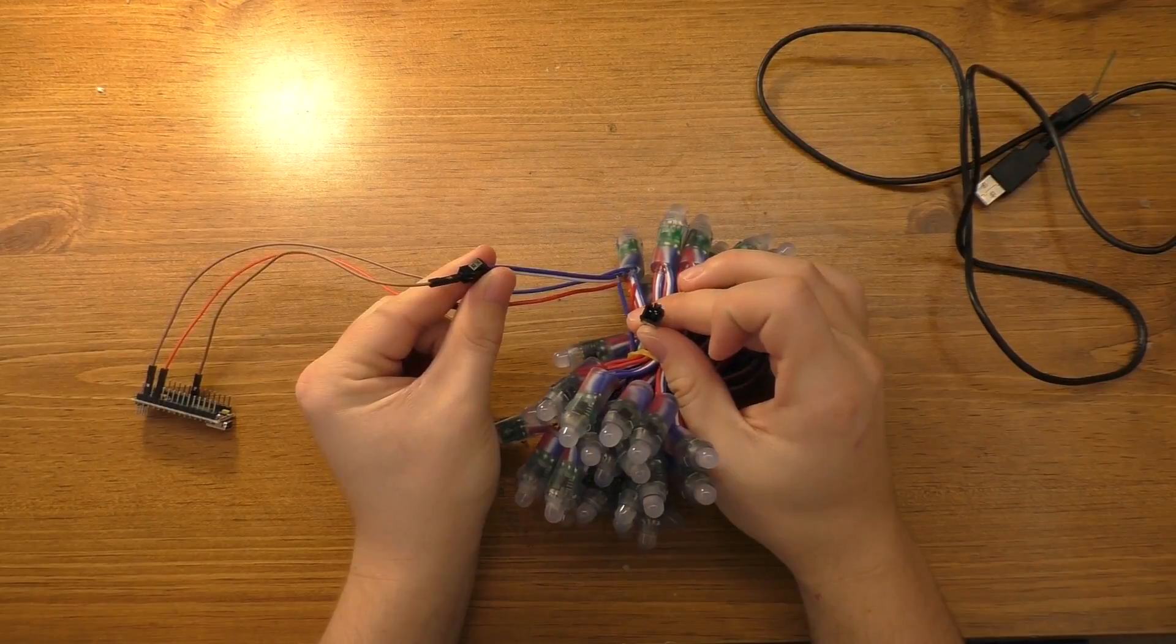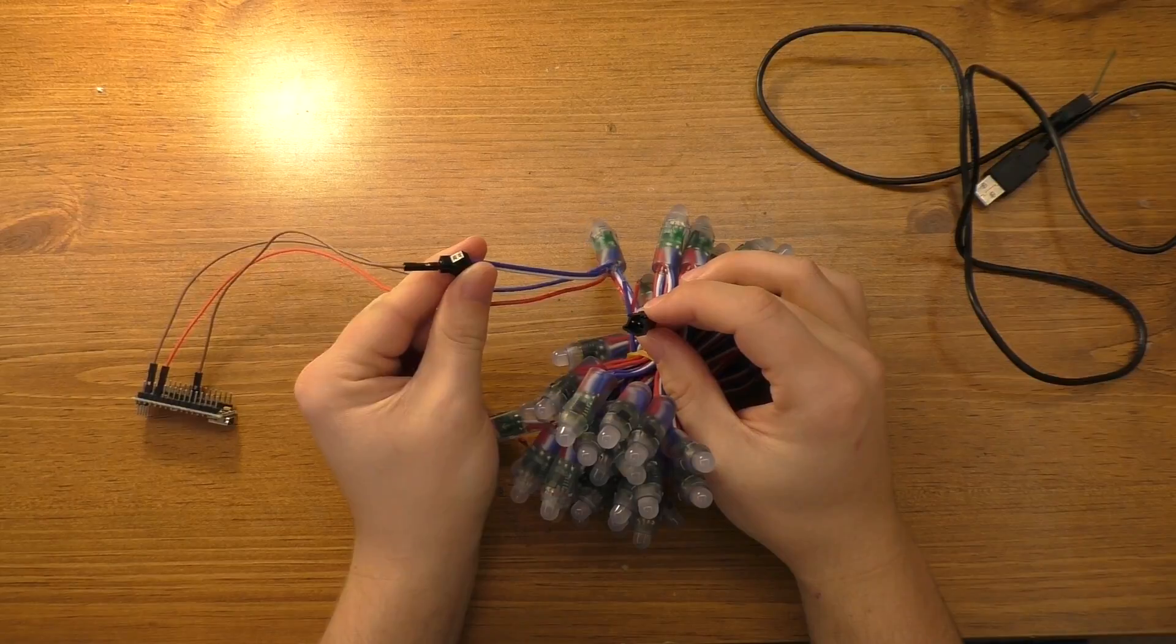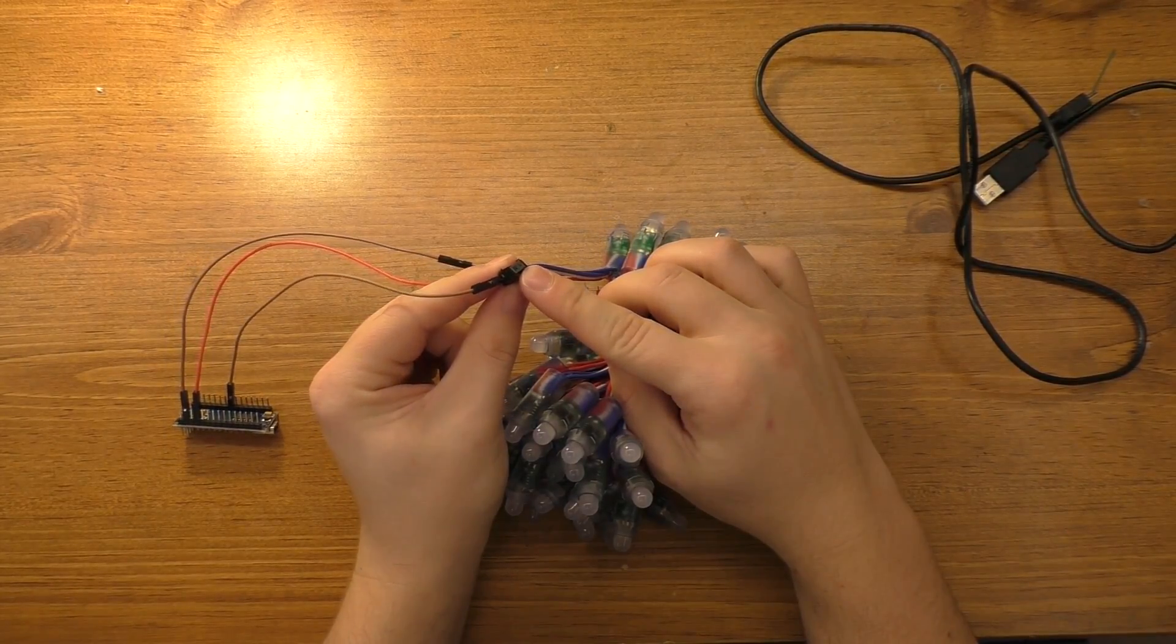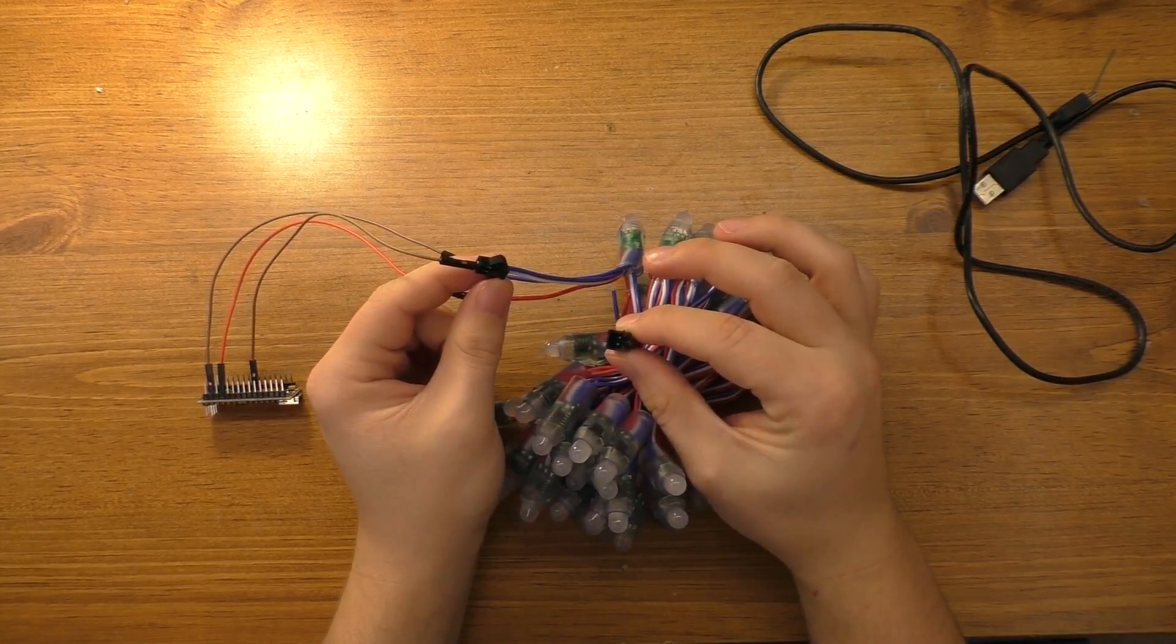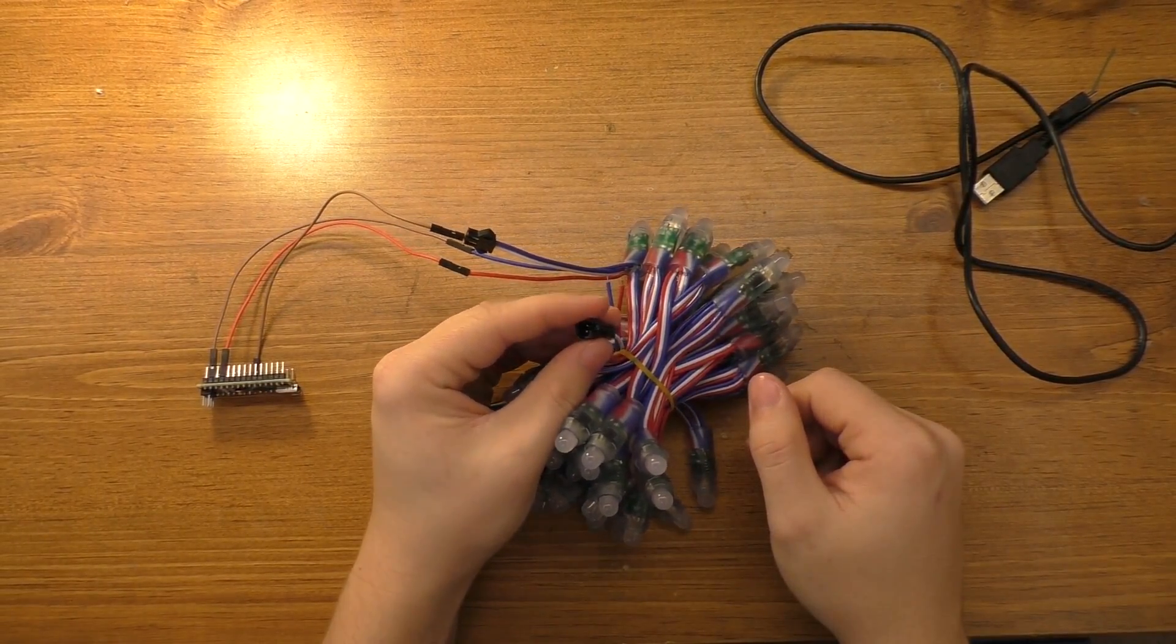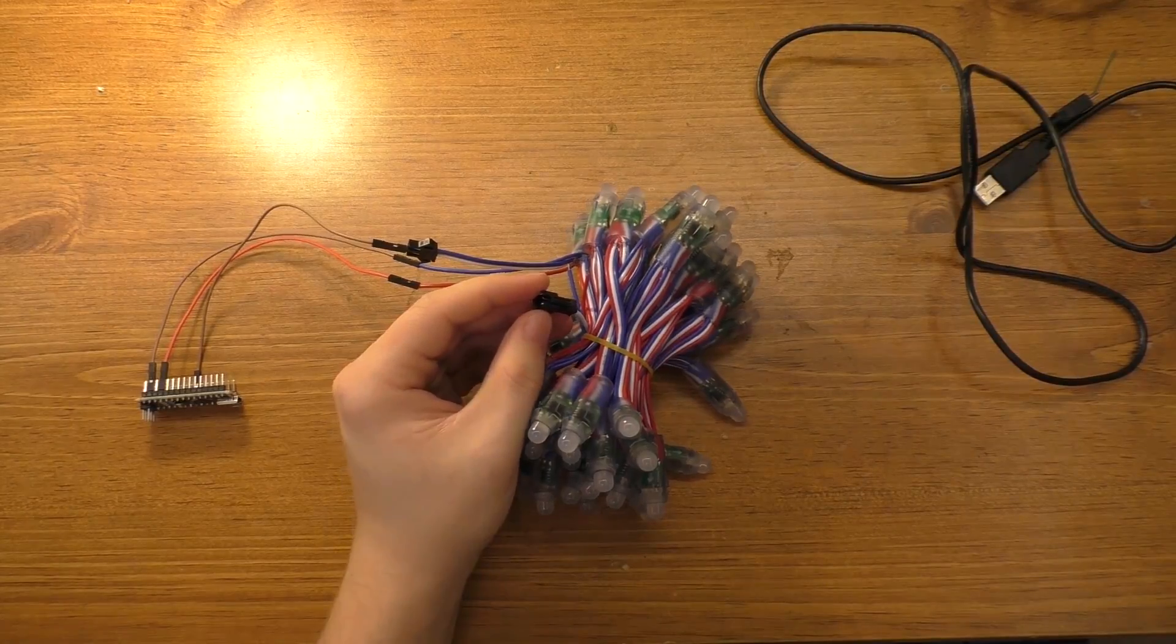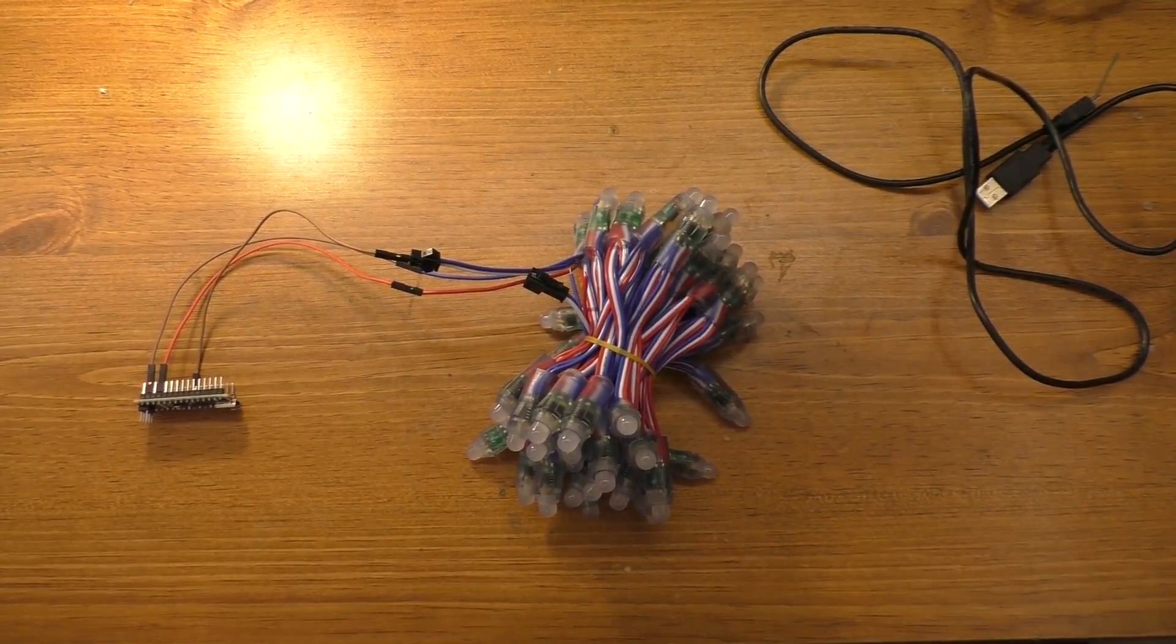One really important thing to note with these is there are two ends to the string. One end you have to put the data into. The other end data will come out of. So the end that has the female connector on it is the side that you need to put data into. And the other side is what you would use if you wanted to continue this length of LED strip. You could actually continue to hook more of these strips together and daisy chain them together and continue to add more and more to them. I'm not real sure if there's a maximum to it or what that maximum is. But I'm sure you can put quite a few of them together.